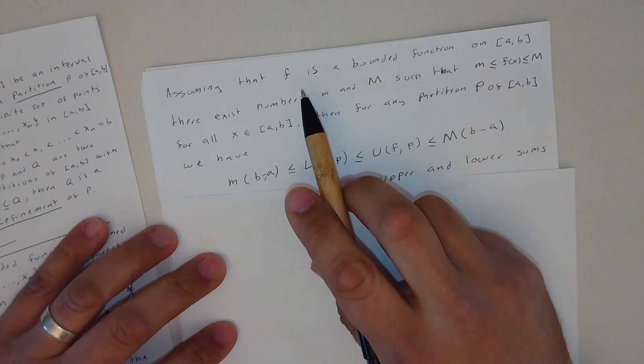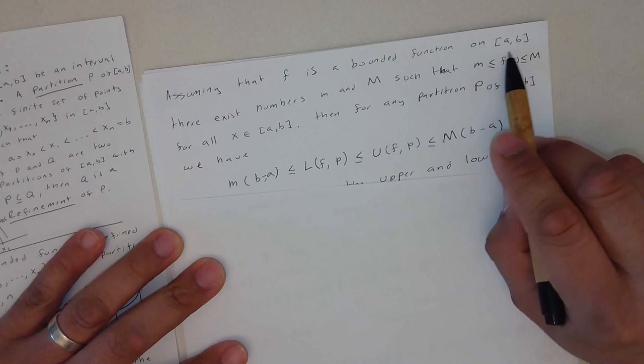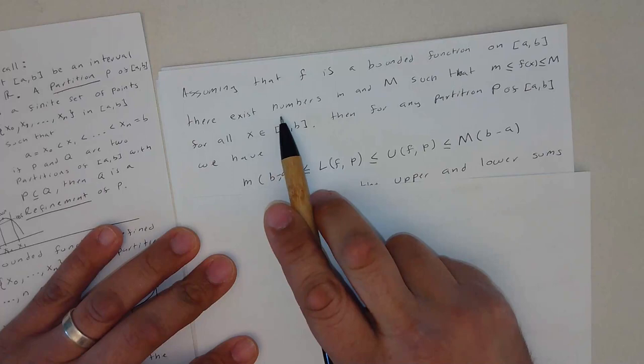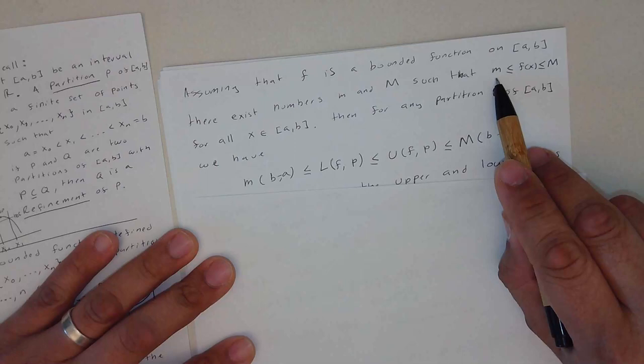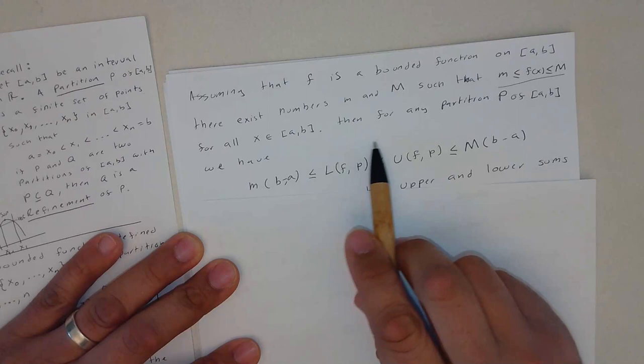Now, if we assume that f, I mean we assumed that before, is a bounded function of being between the interval, this closed interval, there exists number n, the lowercase n and the capital case N, such that the function is in between. I mean, this is basically the definition of a bounded function, right?